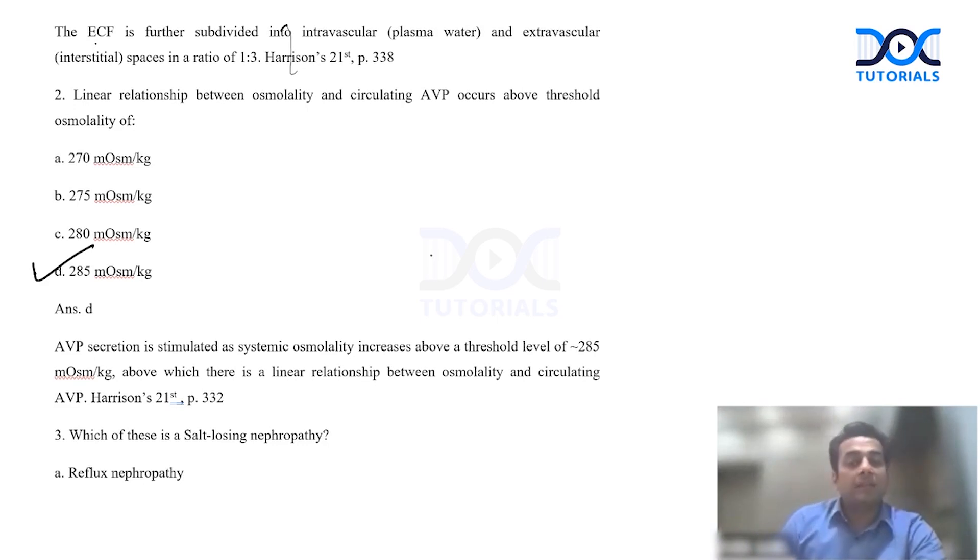Above what osmolality, when the osmolality further increases, the AVP increases, and the answer to it is 285 milliosmoles per kg. Because the arginine vasopressin, or the ADH, the antidiuretic hormone, is stimulated as the osmolality increases above the threshold of 285 milliosmoles per kg, above which there is a linear relationship between osmolality and circulating AVP. Again a basic question but very important.